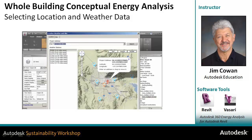Your first step in conceptual energy analysis is to select the location of your project site. Once you've given the address, you can select from interpolated weather stations that are local to the site itself. They are on a grid pattern, equidistant from each other, summarizing or interpolating historic data from weather stations in the area — like airports or maybe a particular building with a weather station — to give you something very specific to the site you're working on.